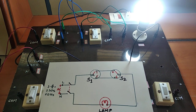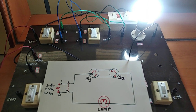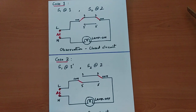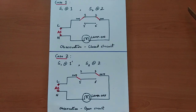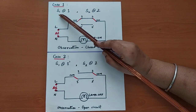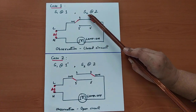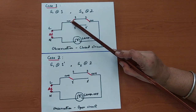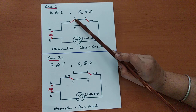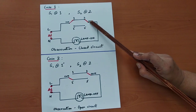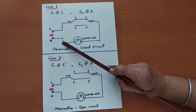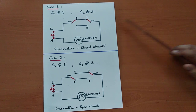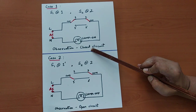Let us understand how the circuit works. In case 1, when switch S1 was at 1 and switch S2 was at 2, the line from the AC supply was connected to common. Common gets connected to 1 because switch S1 is at 1 and switch S2 is at 2. From here, the current has a complete closed path for flowing. Current flows only in a closed circuit, and hence the lamp was glowing.